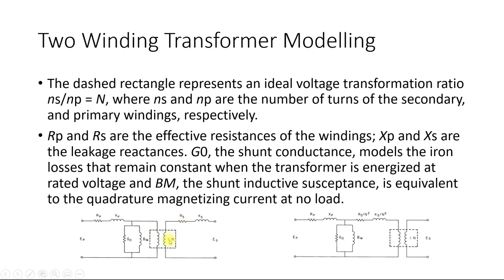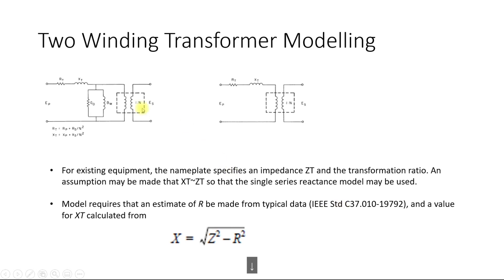We can represent the secondary side resistance on the primary side simply by dividing it by the transformation ratio squared. The equivalent circuit then shows Rp and Rs in series with each other, and similarly Xp and Xs/n² in series. We can represent this simplified circuit as Rt, which is the total resistance, and Xt, which is the total reactance, where Rt equals Rp plus Rs, and Xt is calculated similarly.